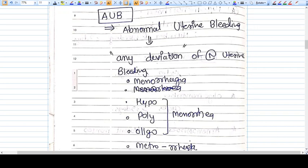Hello friends, in this video we will discuss AUB, that is abnormal uterine bleeding. AUB and DUB is very confusing to students. I will make it clear what is exactly AUB and what is exactly DUB.